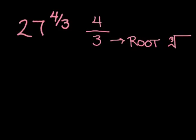If it had been a 2, it would be a square root. If it were a 7, you'd have a 7th root. Whatever number you have in the denominator becomes the index for the radical.